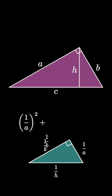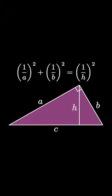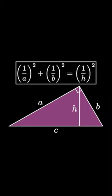Because this is a right triangle, we conclude that 1 over A squared plus 1 over B squared is equal to 1 over H squared. So the sum of the squares of the reciprocals of the side lengths in a right triangle equals the square of the reciprocal of the height.